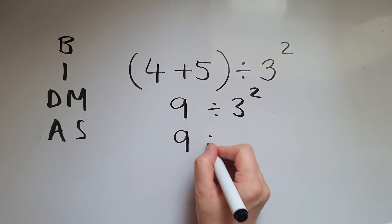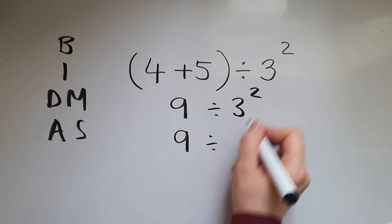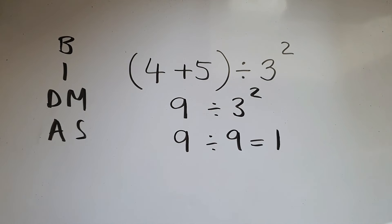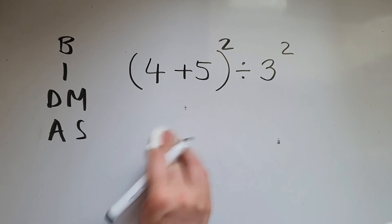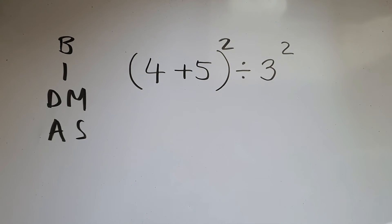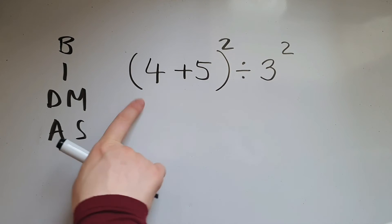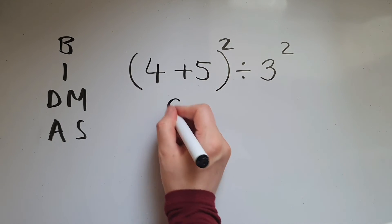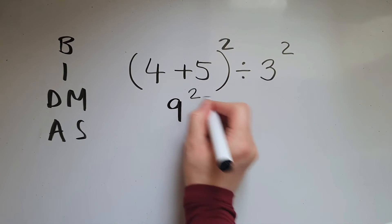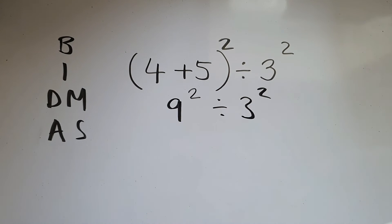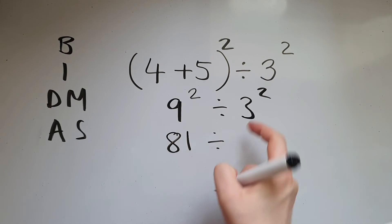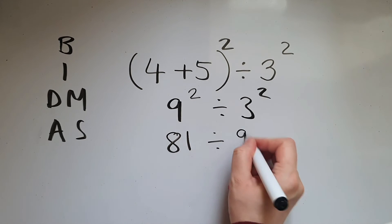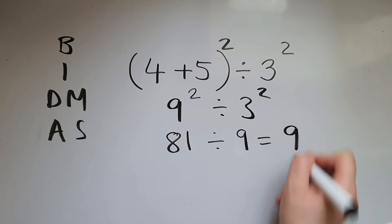25 divided by — 3 squared is 9, so the answer is 1. What if we had this, for example? We'll do brackets first, which is 9 squared divided by 3 squared. 9 squared is 81, divided by 3 squared, which is 9, and the answer is 9.